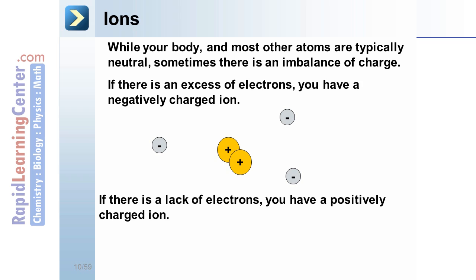On the other hand, if there is a lack of electrons, you have a positively charged ion. In this example, there is one extra proton, so there is a positive net charge here.